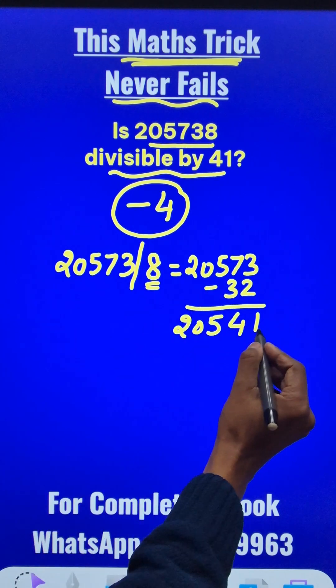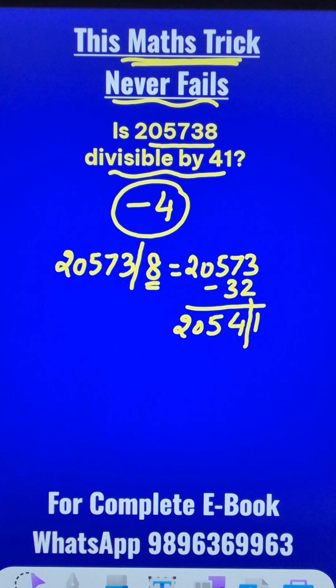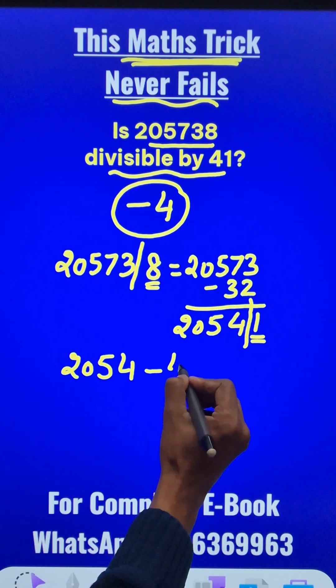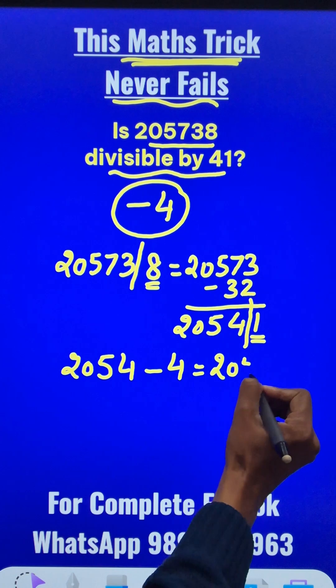Now I follow the same procedure for 20541. Separate out the last digit 2054 minus 4 times the last digit is 4 itself which gives me 2050.